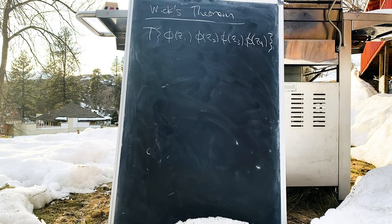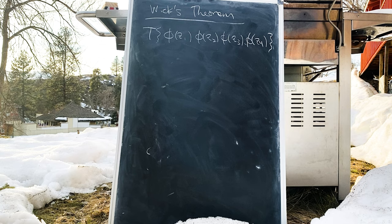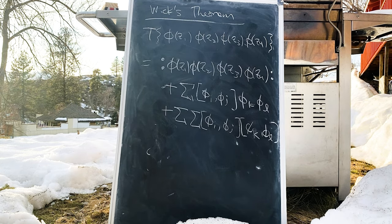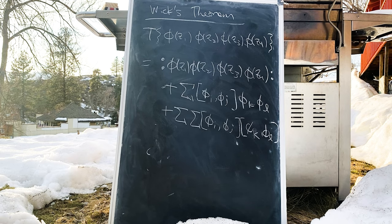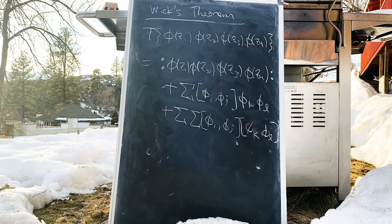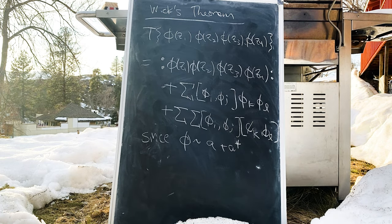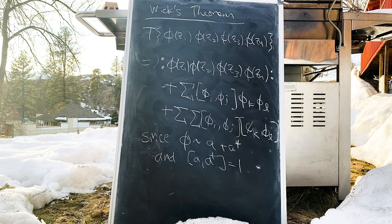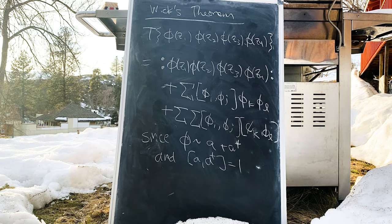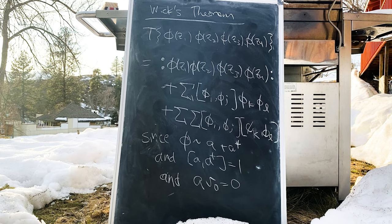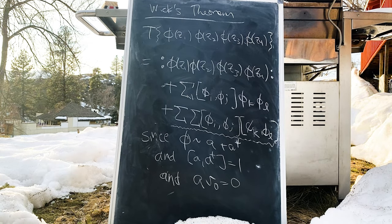Okay, Wick's theorem tells us how to compute time ordered products of operators in terms of normally ordered products of operators. More precisely, these observables are given by the normal ordered product of all the fields, together with all possible combinations of their commutators. It's a combinatorial problem, really. Nothing too serious. But to contextualize it, note that each field phi will have an a and an a dagger, appearing in equal numbers. And because of this, all normally ordered products will end in an a, and therefore annihilate the vacuum. Thus, the only terms that are non-vanishing are those strictly proportional to the commutators of operators.